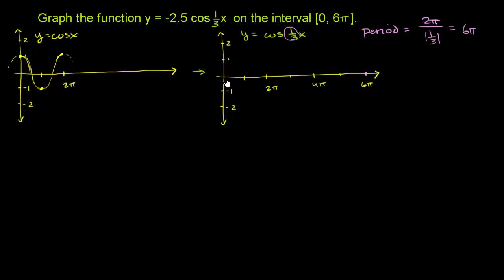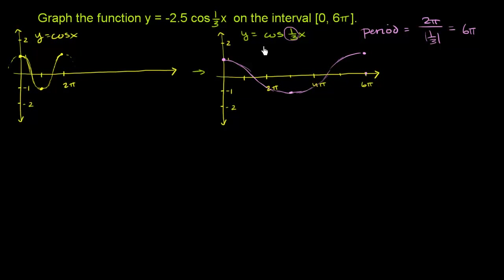At x equal to 0, 1 third times 0 is 0, and cosine of 0 is 1. When x is equal to 6 pi, 6 pi divided by 3 is 2 pi, and cosine of 2 pi is 1. Going in between, we try 3 pi: cosine of 1 third of 3 pi is cosine of pi, which is negative 1. So when x equals 3 pi, the value is negative 1. You can see the period here is 3 times longer than the original.